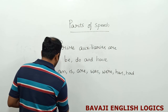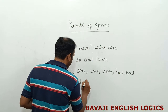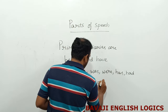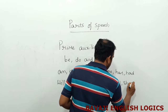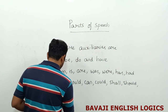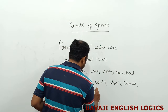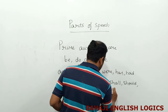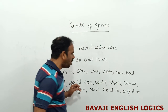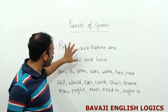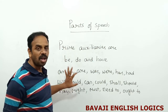And what are modals? Modals are will, would, can, could, shall, should, may, might, must, need to, have to, and ought to. So all these are called modal auxiliaries. These are prime auxiliaries, these are auxiliary verbs that support the main verb, and these are modal auxiliaries.